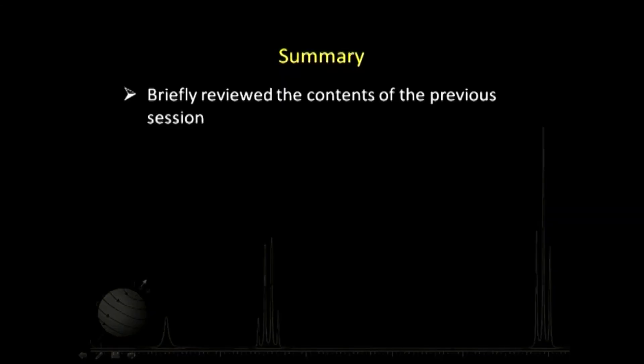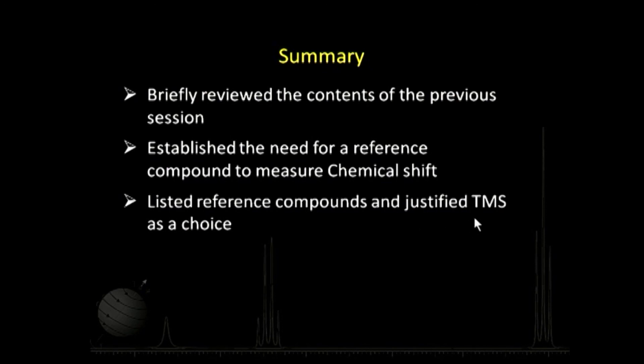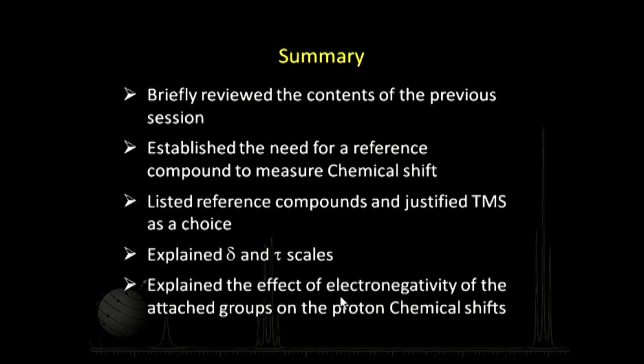To sum up today's session: we reviewed the previous session, established the need for a reference compound to measure chemical shift, and identified TMS as the primary reference compound, justifying its suitability based on its properties. We explained the two scales for chemical shift — delta and tau — and took up the effect of electronegativity of attached groups on proton chemical shift. The remaining factors — anisotropic effect and hydrogen bonding — will be covered in the next session.